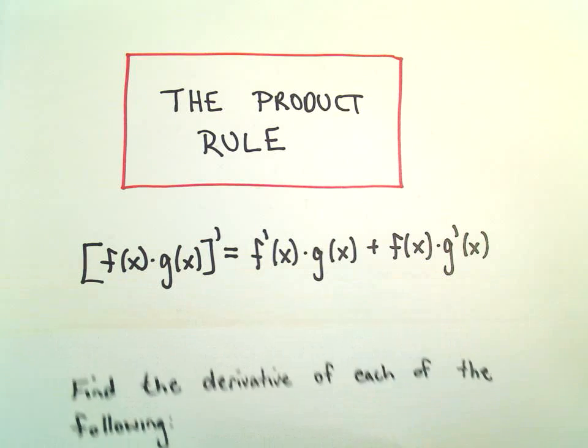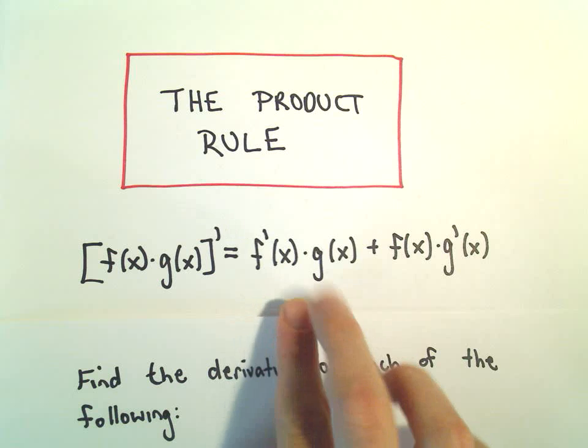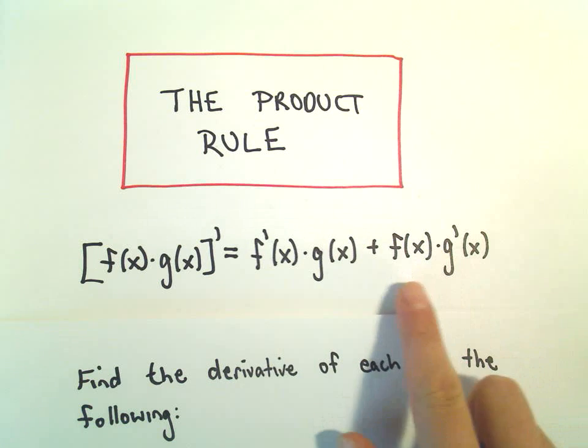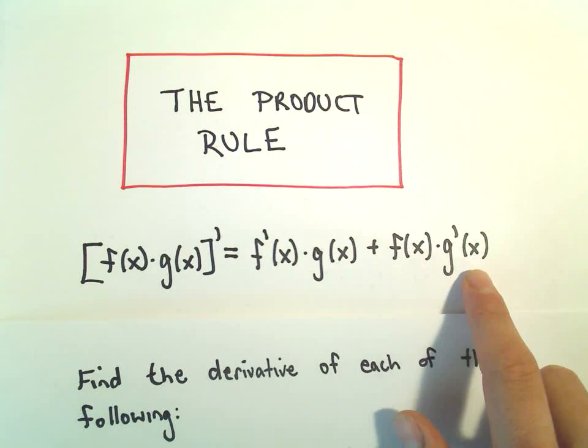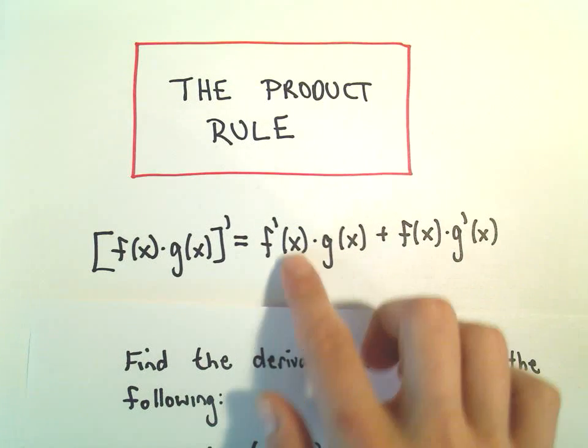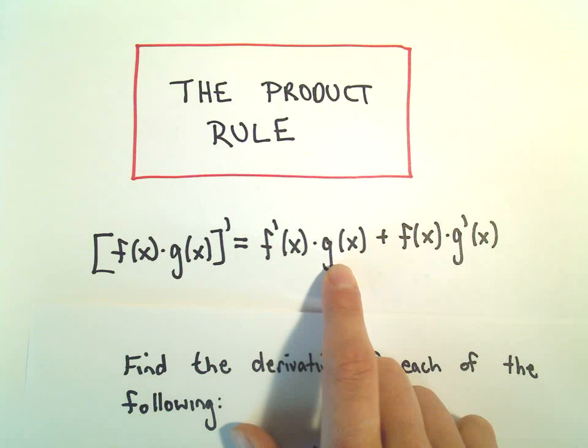Notice a couple things here: multiplication and addition are commutative, so we could have done f times g prime plus f prime times g. It doesn't really matter the order that you do these things, as long as you remember to take the derivative of one part, leave one alone, plus, and then just switch them out.